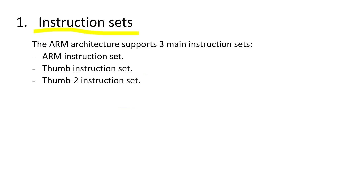First is the instruction set. With the ARM architecture, it supports three main types of instruction sets: the ARM instruction set, the Thumb instruction set, and the Thumb-2 instruction set. Each has different characteristics and designs for performance and code density requirements — we will explore them one by one.